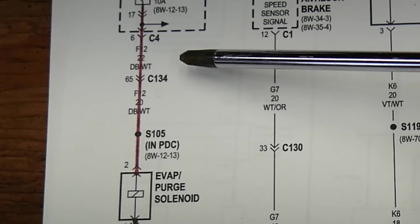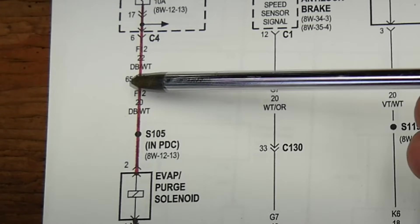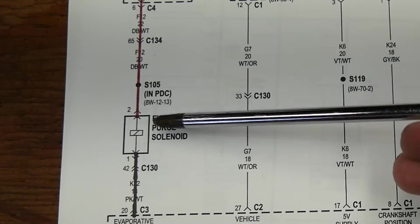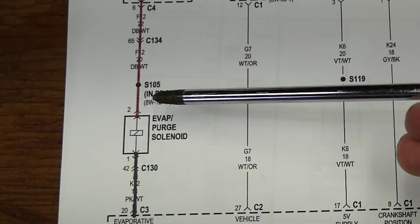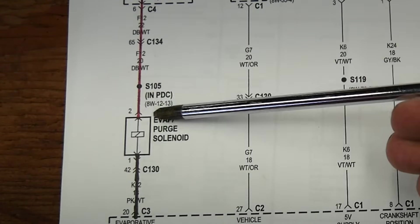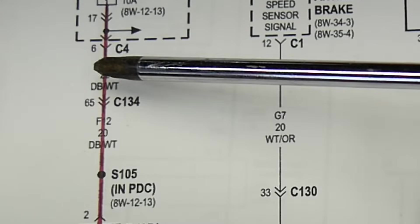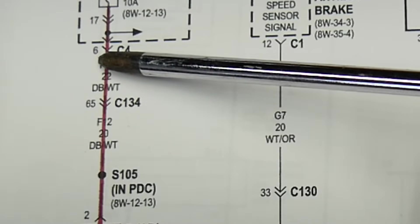Now notice how we've kind of ignored the different numbers, the letters, the arrows, all that stuff on this circuit. Well basically, you only need to pay attention to those if there's a problem in this wire. But, just to give you some idea, this number 6 here,